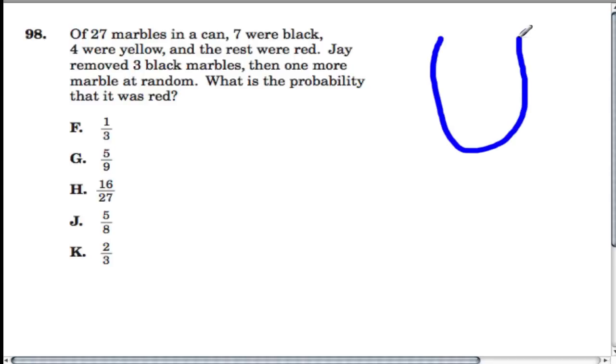Probability question. There's a can with 27 marbles in it. Seven of these marbles are black, four are yellow, and the rest were red.